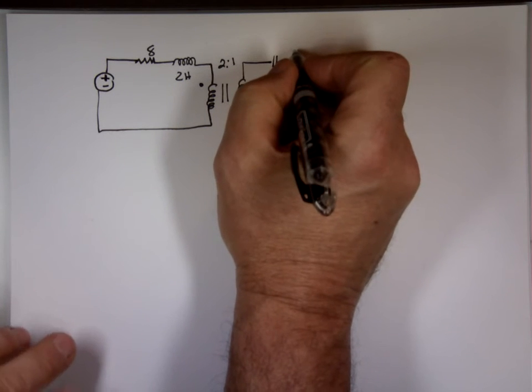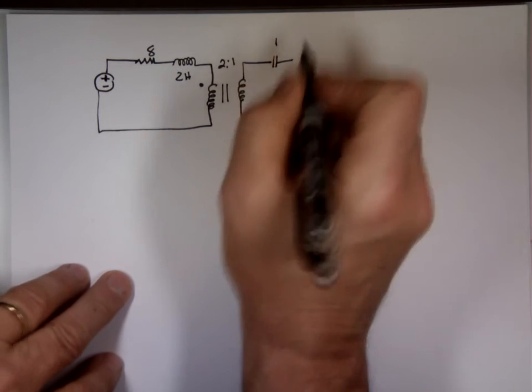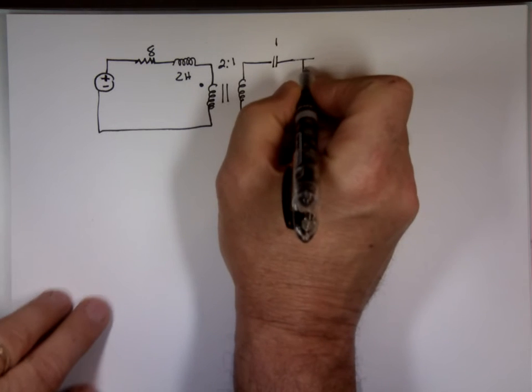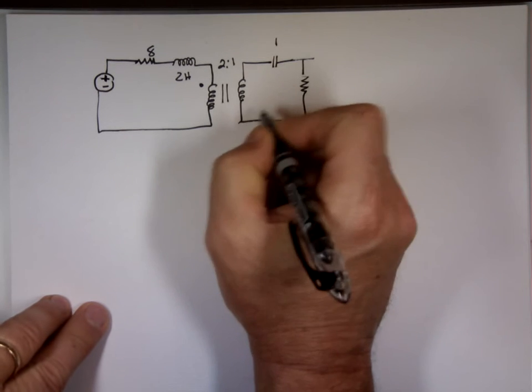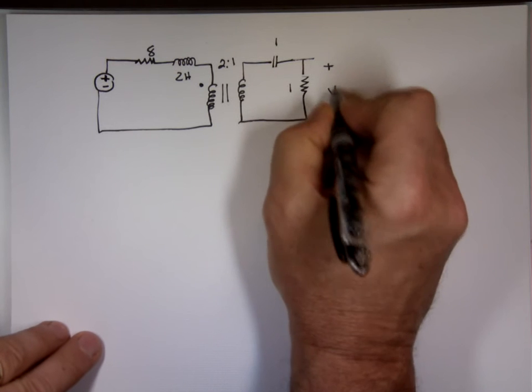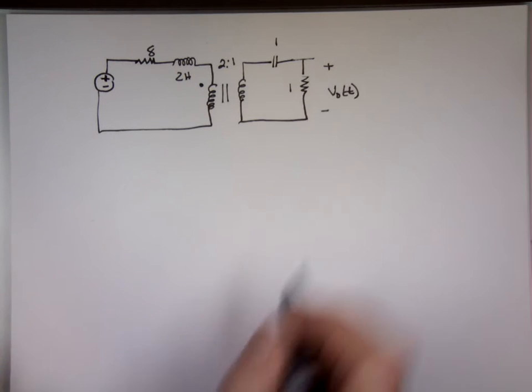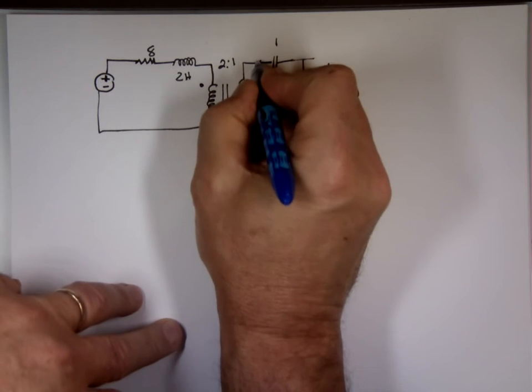This is a capacitor of one-third farad, and this is one ohm. I'm looking for V_out, the voltage right there, plus to minus. Now if you remember last time we said we can use Thevenin equivalents. We can find the equivalent circuit, which is really Thevenin. If I chop it right there and find the equivalent value.